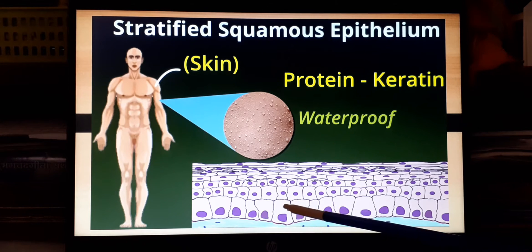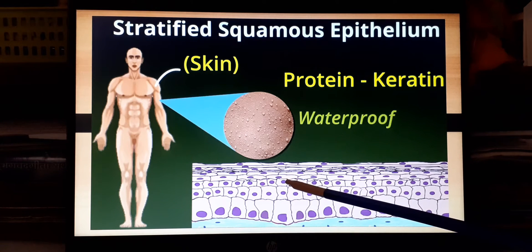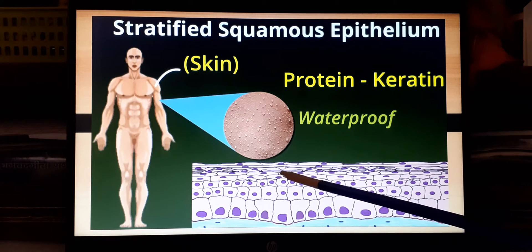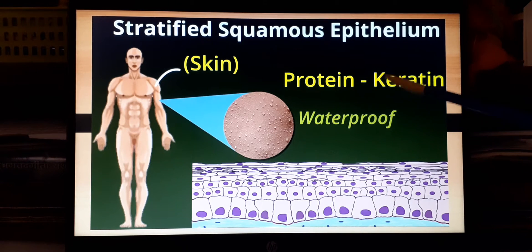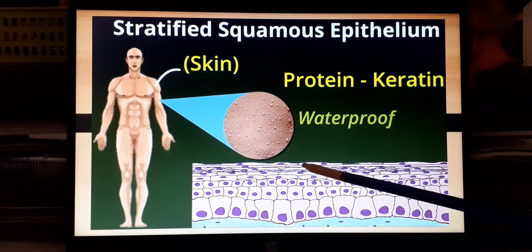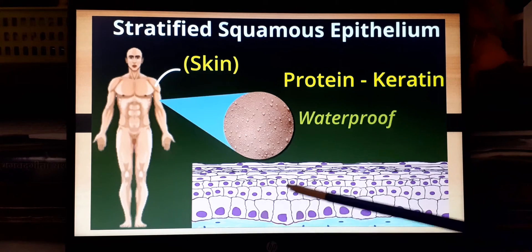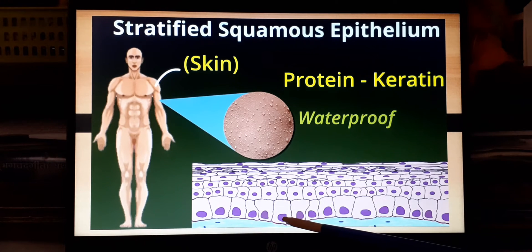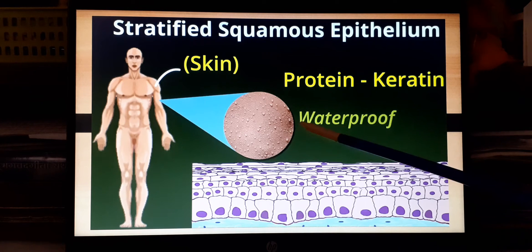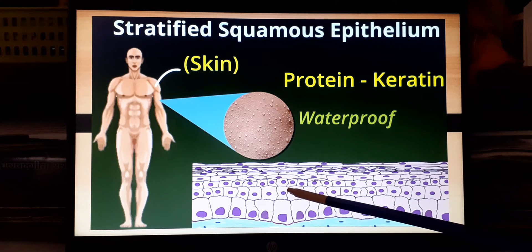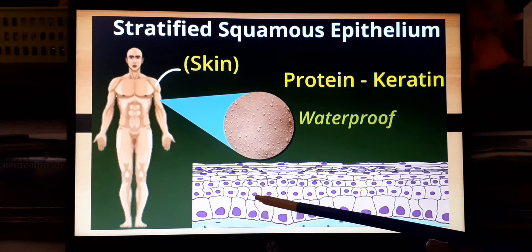Gradually, the upper layers of the epithelial tissue develop a protein called keratin, so the cells become keratinized, making them waterproof — protecting the inner regions of the body and the skin from dehydration and providing general protection.